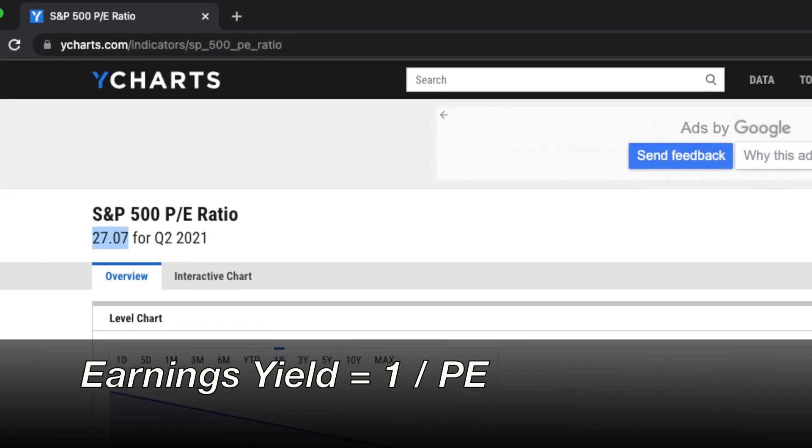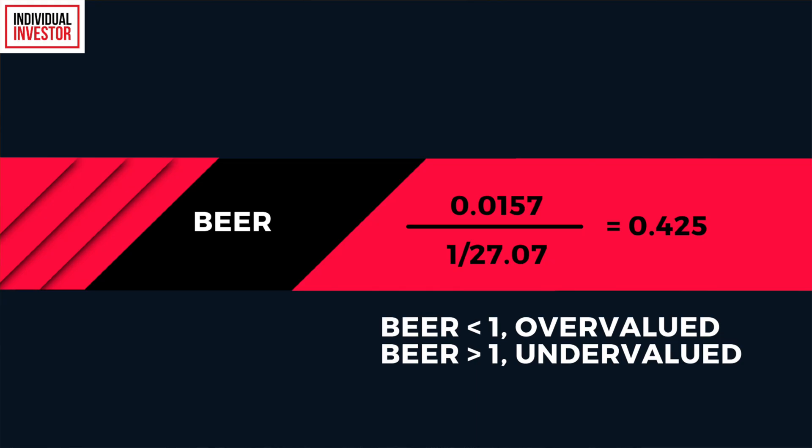In this case, we have a PE ratio of about 27.07 for the S&P 500. So if we divide bond yields by the inverse of the PE ratio, we get a ratio of 0.425.